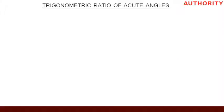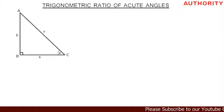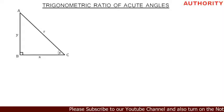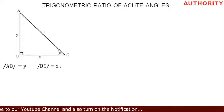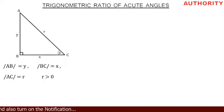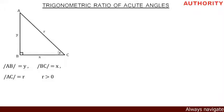Welcome. Today let's talk about trigonometric ratios of acute angles. Let's consider any triangle ABC. We have our angle theta, and this triangle is a right angle triangle. Let's say that line AB is equal to y, line BC is equal to x, and line AC is equal to r, where r is greater than zero.